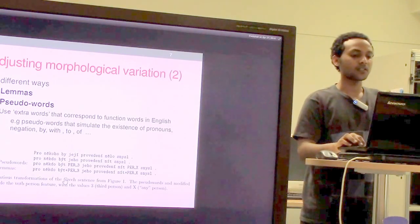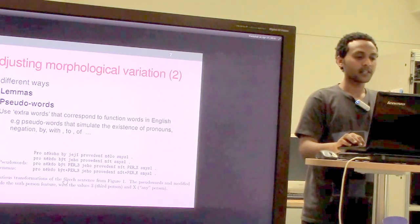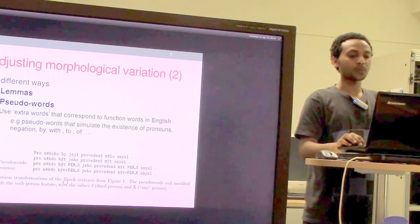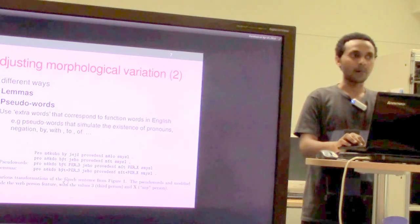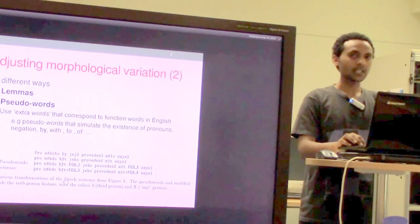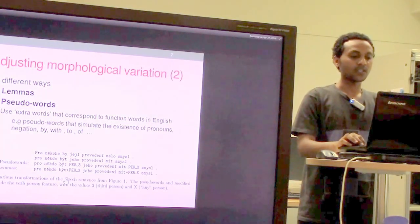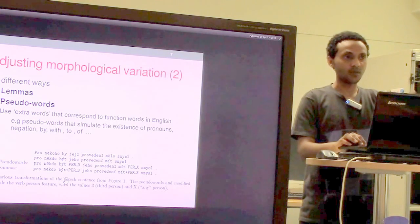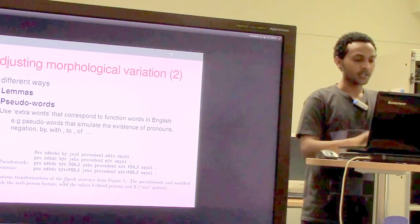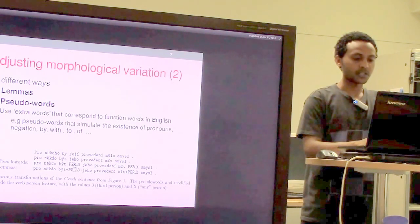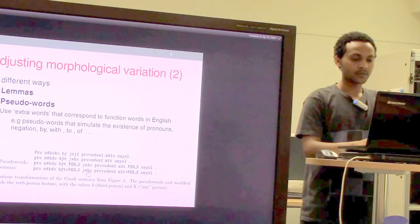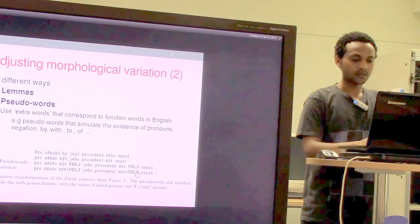The next method is pseudo words. They used extra notation words that correspond to function words in English — function words like 'by,' 'with,' and 'to' that are not distinctly present in Czech but are attached to the word. They constructed extra words to correspond to those English function words. For example, 'person_3' means the word is in the third person.